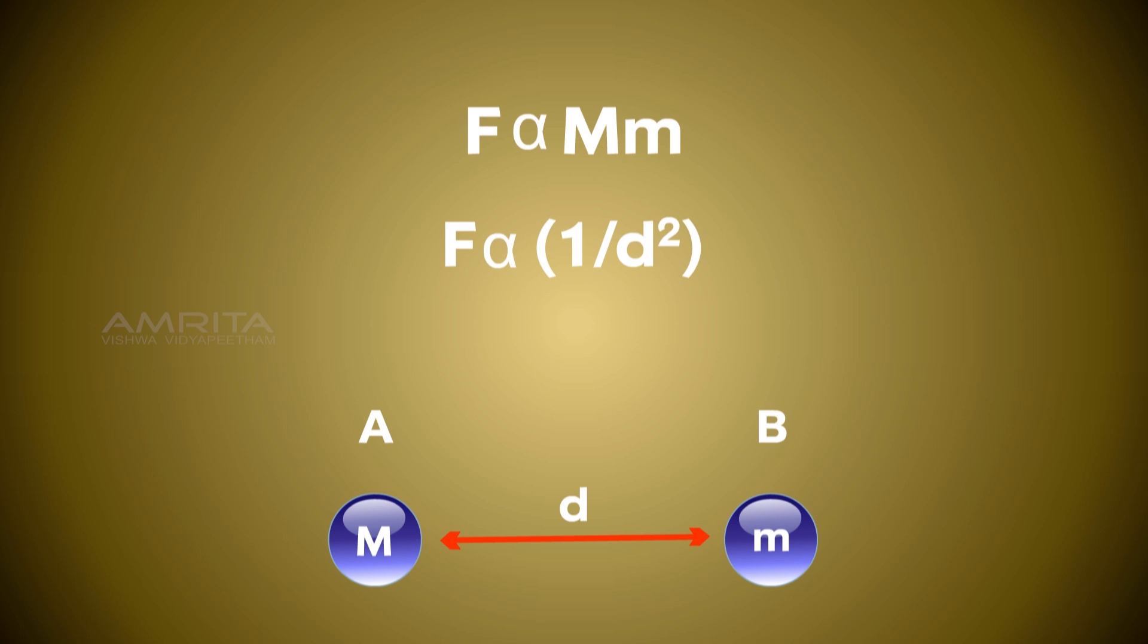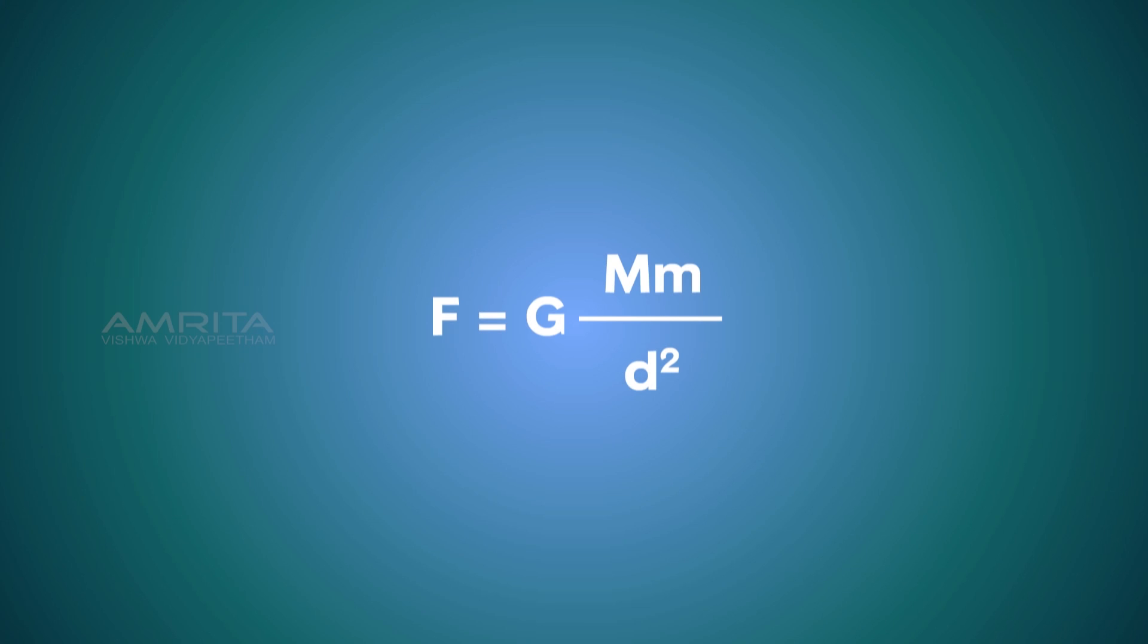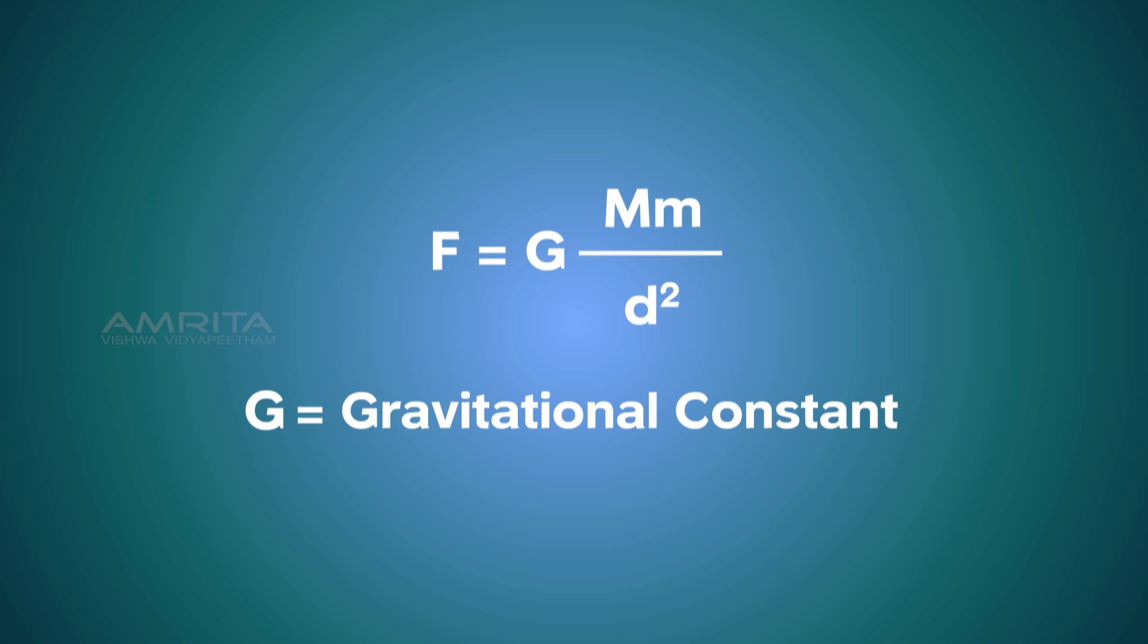And F is inversely proportional to the square of the distance between the two objects. F is equal to G into Mm by d square, where G is the gravitational constant.